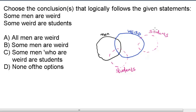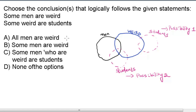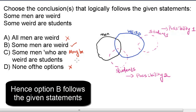We have to bear in mind these two possibilities — possibility 1 and possibility 2. Conclusion A says 'all men are weird,' which is false because men is not a subset of weird. Conclusion B says 'some men are weird,' which supports the given statement. Conclusion C — some men who are weird are students — is true only in possibility 2, so it is not a strong statement; we can term it as 'maybe.' Conclusion D — none of the options — is not true because B is valid.